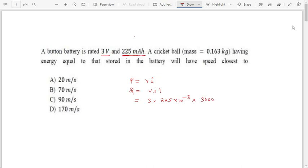This is the total energy stored in the battery which is also equals to the kinetic energy of the cricket ball. So that means half into 0.163 into v squared. From here you can calculate the value of v.